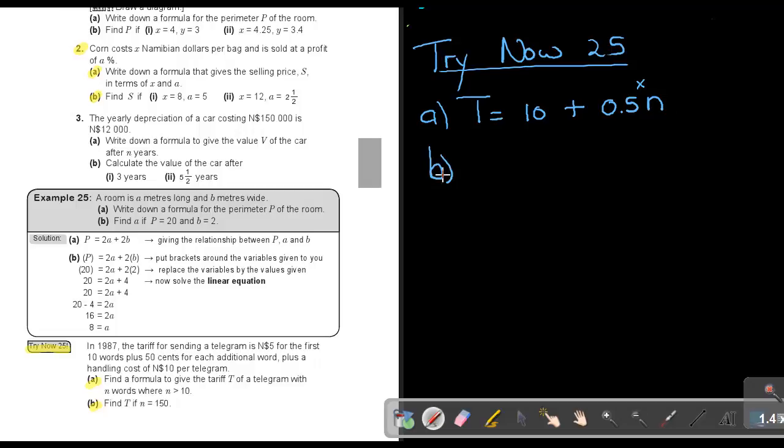Number B: Find T if N is 150. I'm just going to substitute in the formula. First write down the formula, then substitute that 150 words. If I multiply that, I will get an answer of N$85, and that will be the cost of sending that telegram.